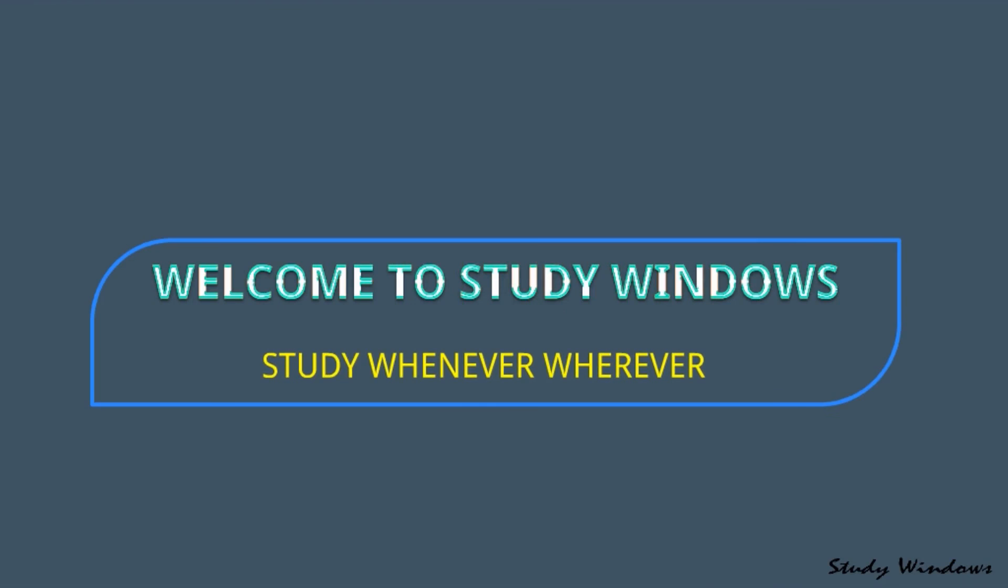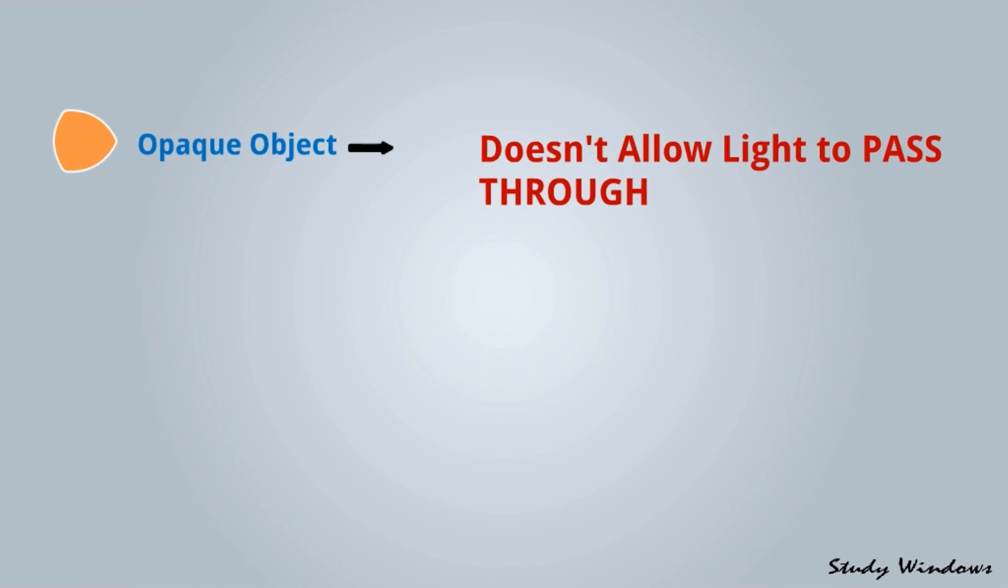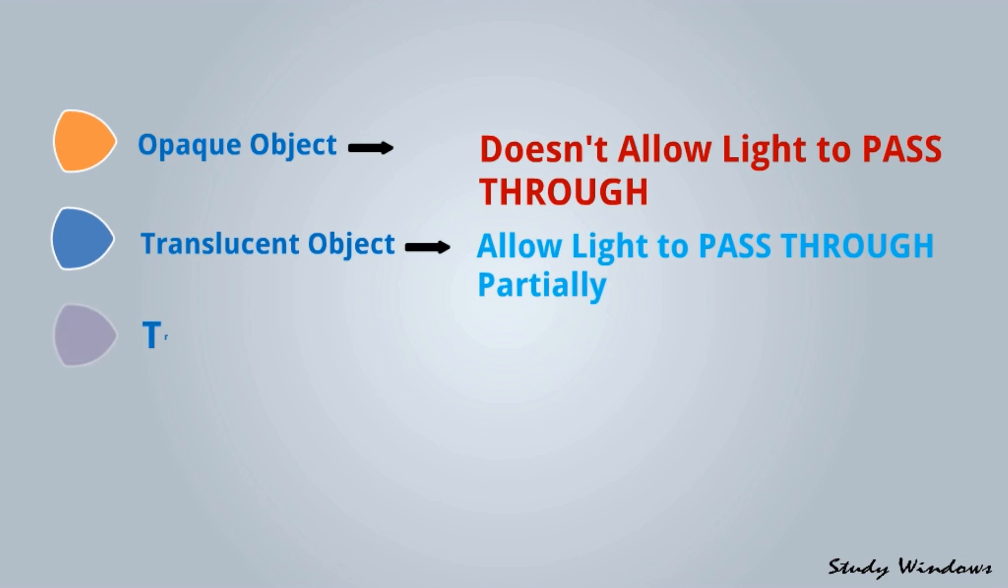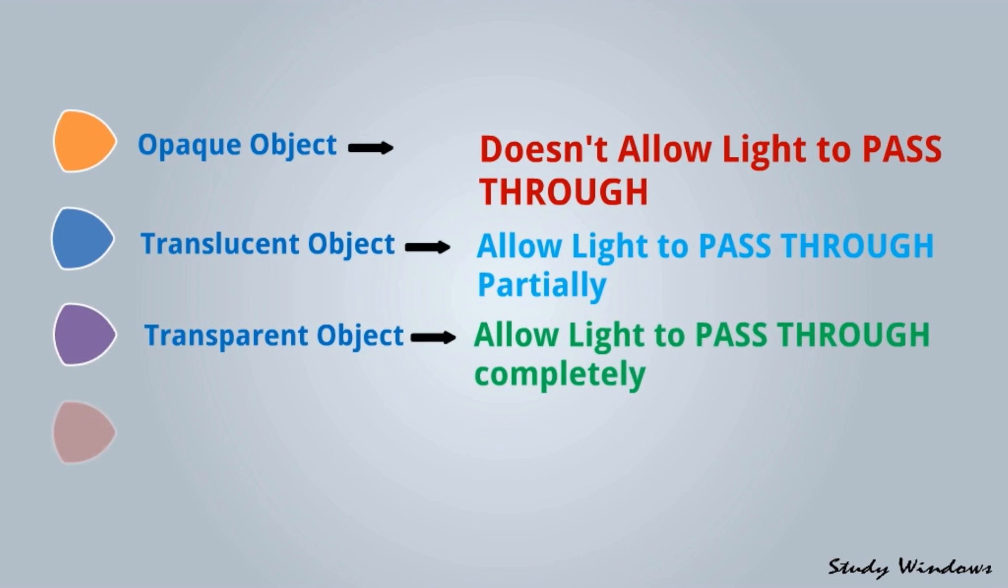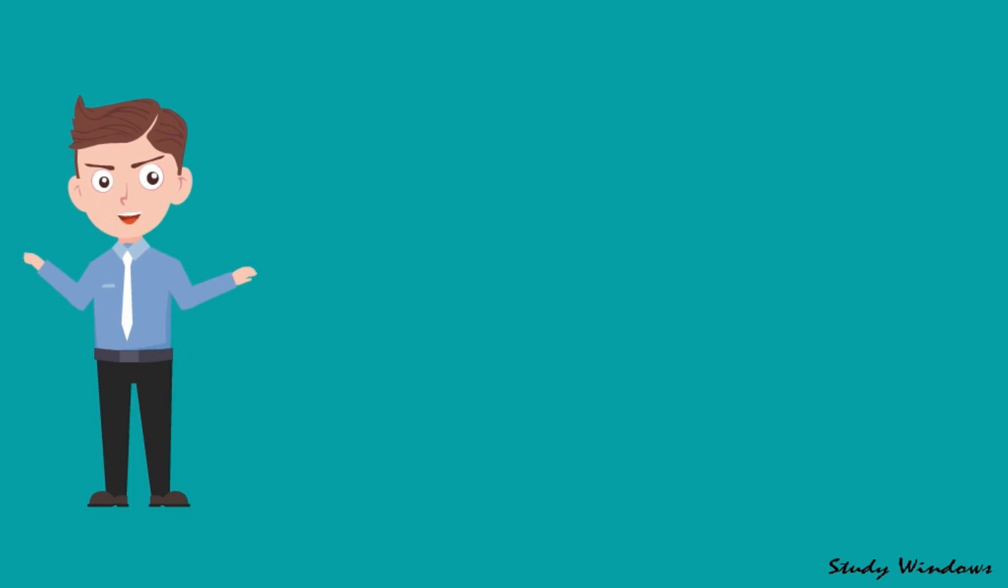Hi everyone, welcome to Study Windows - study whenever, wherever. In our last session we learned the following things: opaque objects don't allow light to pass through, translucent objects allow light to pass through partially, transparent objects allow light to pass through completely, and light travels along a straight line.